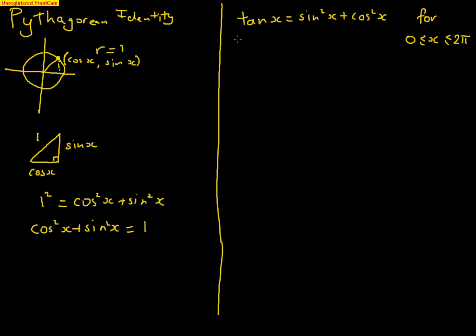So here's our example. We've got tan of x is equal to sin squared x plus cos squared x. Now, it's not always going to be this obvious. We can have variations, which I'll get to slightly later.